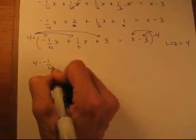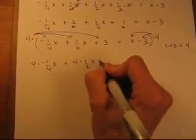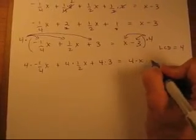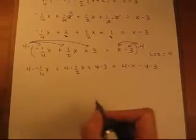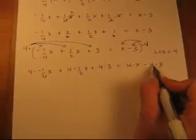4 times minus 1/4 x plus 4 times 1/2 x plus 4 times 3 equals 4 times x minus 4 times 3. Okay, and you can see here that every term has the LCD of 4.